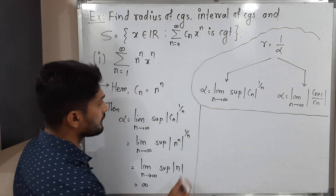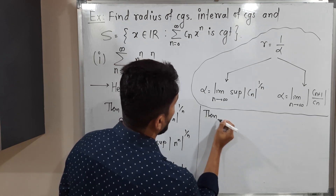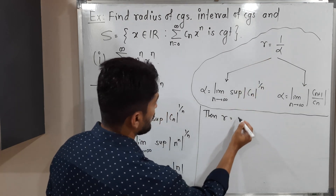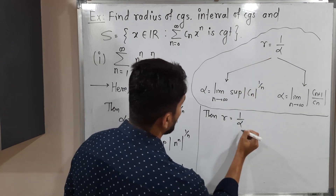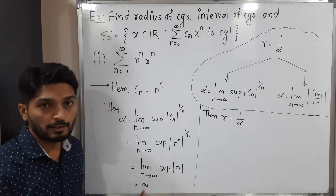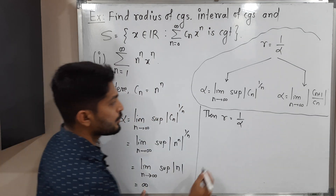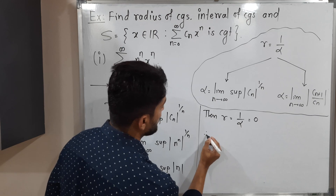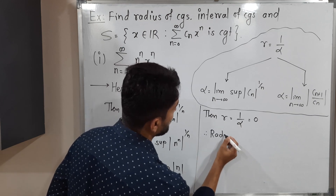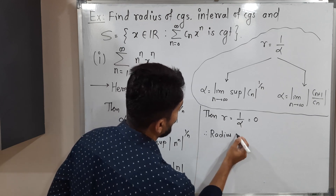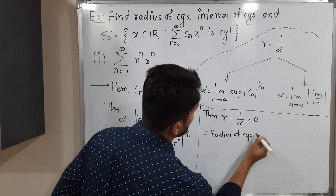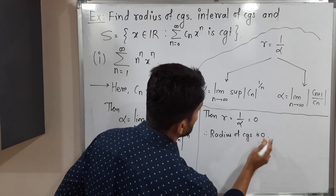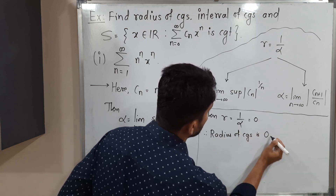The radius of convergence R is 1 by alpha. The value of alpha is infinity, so 1 upon infinity is 0. Therefore, the radius of convergence is 0.